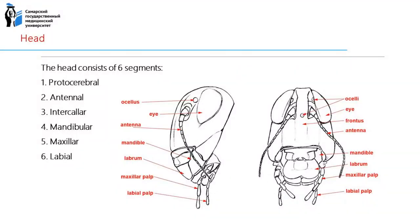Insects — Insecta or Hexapoda in Latin — as all other arthropods, have a segmented body covered with a chitinous cuticle. The body of insects is divided into three sections: head, thorax, and abdomen. The head consists of six segments: protocerebral, antennal, intercalar, mandibular, maxilla, and labial.